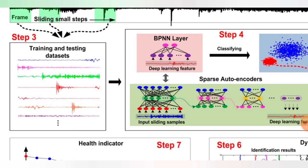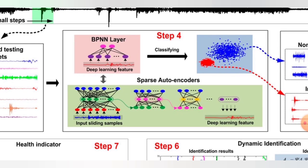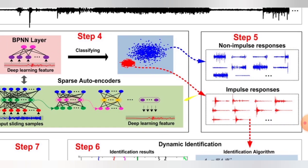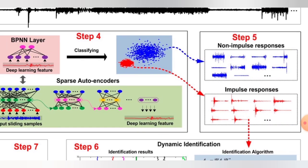Step 4: BPNN layer sparse autoencoders for deep learning features. Plot the data into the XY plane and use neural networks to identify which fault is created by which component. Correlate all parameters with autoencoders. Deep learning features are plotted, and non-impulsive and impulsive responses can be separated out.